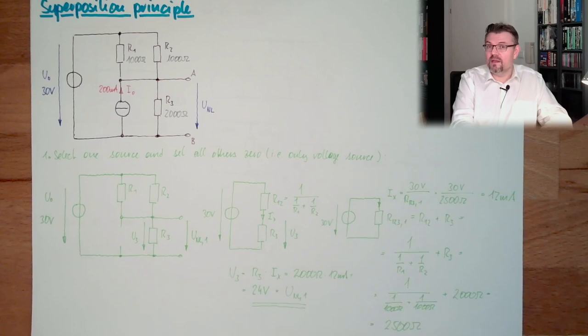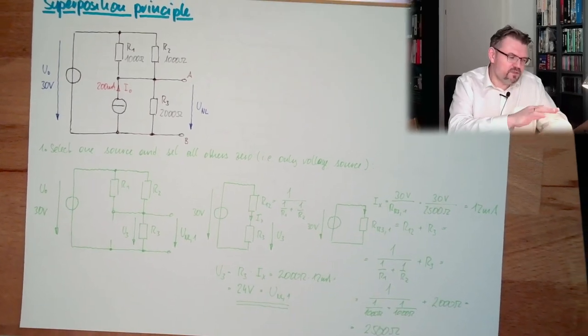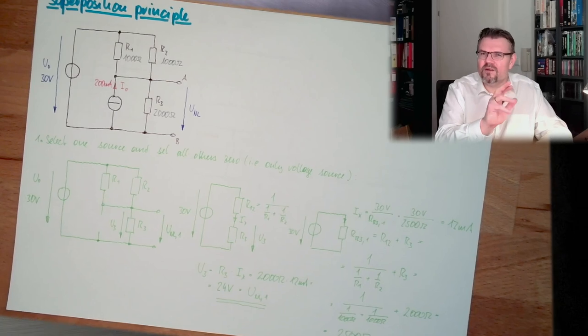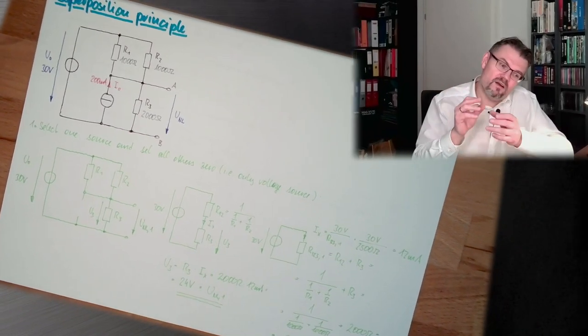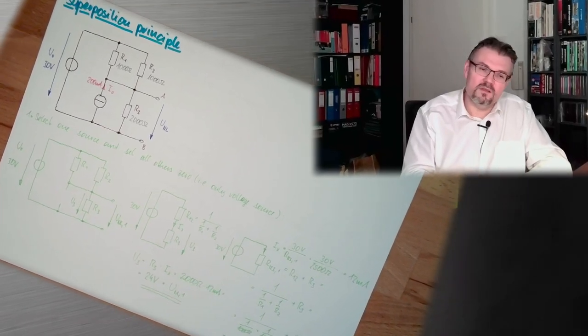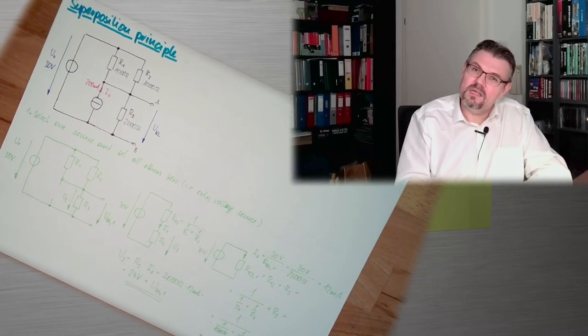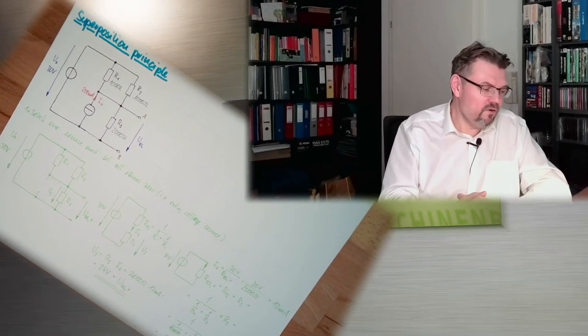Superposition principle. Now, actually, we can calculate almost all simple circuits. Simple ones, with just resistors and sources and so on. If there are other elements inside, we will come to this. There are capacitors, there are inductivities and so on. It's working a little bit different, but for us now, that's enough.